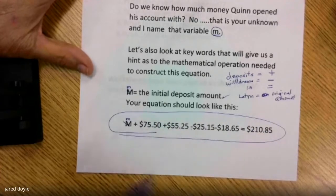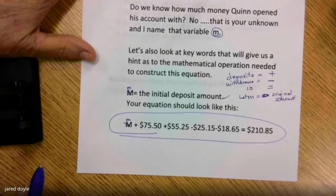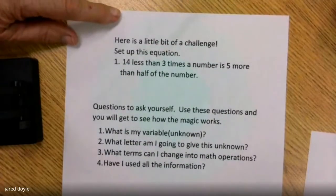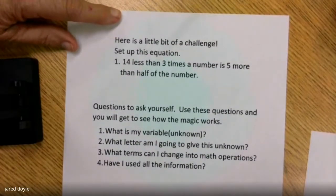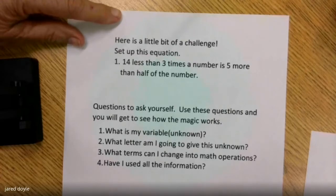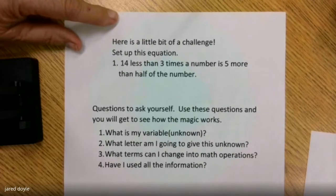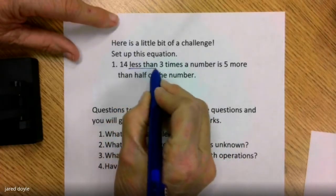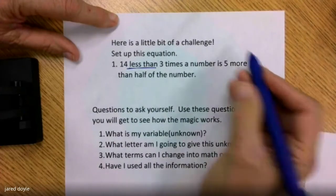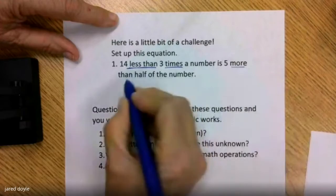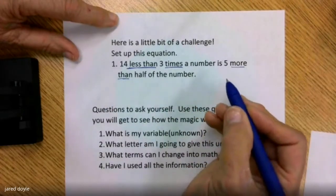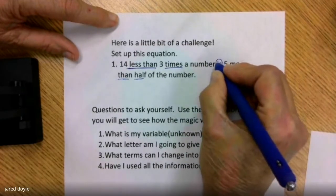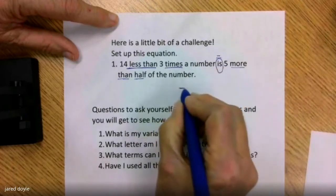Here is a little bit of a challenge — set up this equation: '14 less than three times a number is five more than half of the number.' Let's underline the terms that mean operations: less than, times, more than, half. And here is our equals mark. What did I tell you about the terms 'less than' and 'more than'? You are flipping the numbers. So three times a number is going to be my first term, 14 less than that — so 3N minus 14.